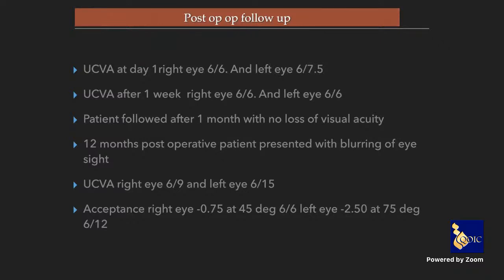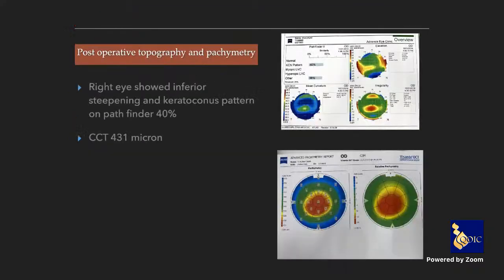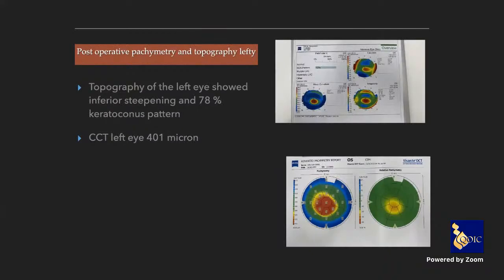Twelve months later, he presented with blurring and astigmatic error — topography revealed keratoconus. We missed something. In refractive surgery screening, a multimodal approach is essential: clinical history, examination, topography, Scheimpflug imaging, posterior elevation, and TBI (tomographic and biomechanical index). Once keratoconus is diagnosed post-procedure, collagen cross-linking is indicated — which we did for the left eye. After one year, the cornea had not progressed and the right eye remained stable.